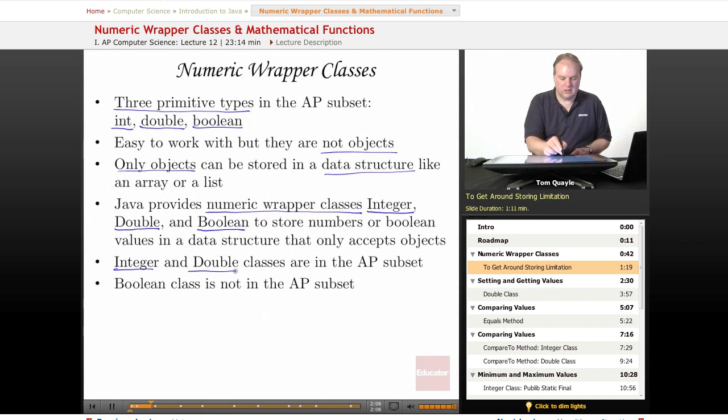Integer and Double wrapper classes are in the AP subset. Boolean class is not in the AP subset, but I wanted you to know that it existed in case you need to use it for any other reason. In general, every primitive type, whether or not it's part of the AP subset, has a corresponding wrapper class that allows you to work with that type of data, but as an object.